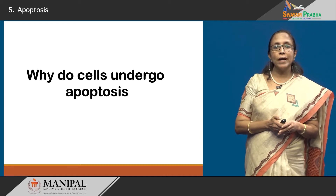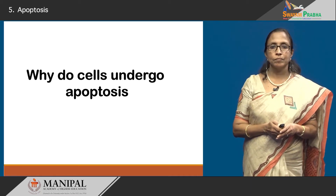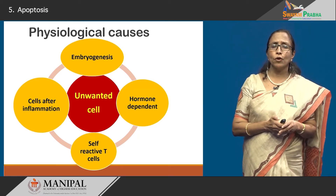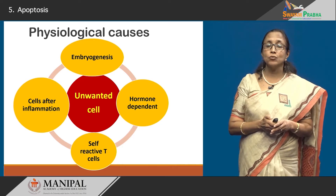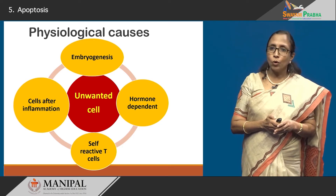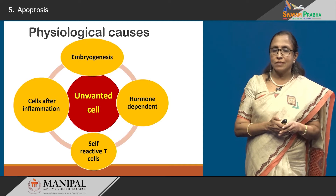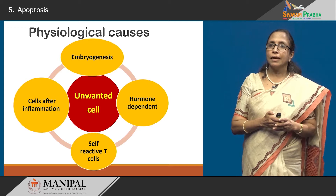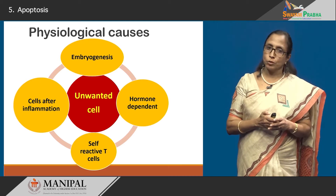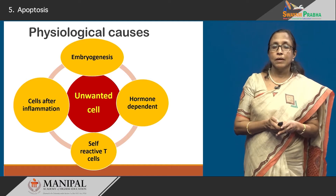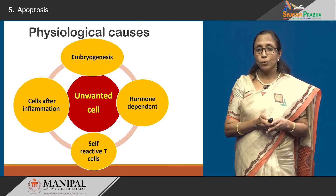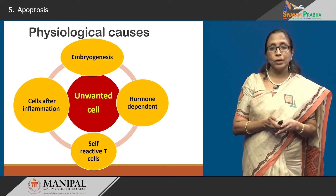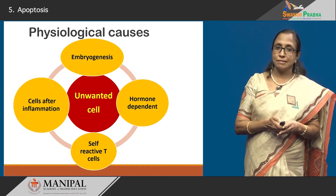Now to see why cells undergo apoptosis — there are many causes where cells are unwanted, useless, or have done their function, and they are taken away by apoptosis. It can occur in embryogenesis, in various hormone-dependent processes, in cells after inflammation, and also in certain self-reactive T cells.